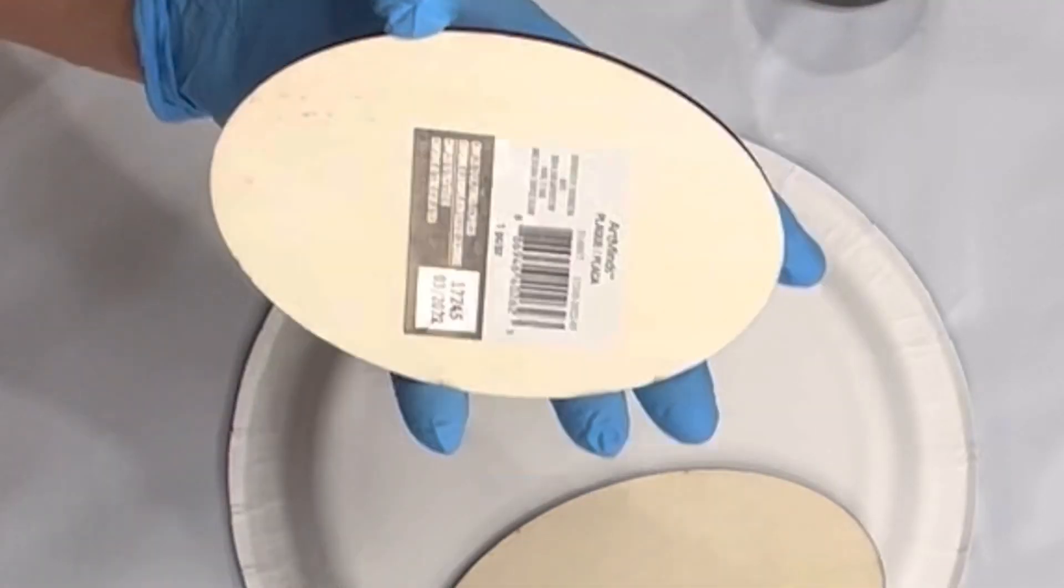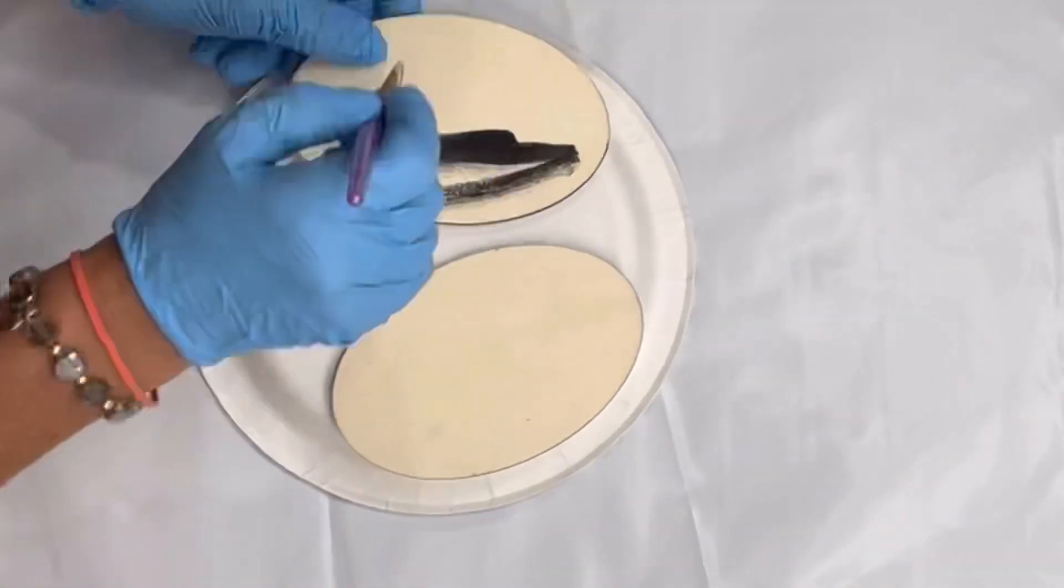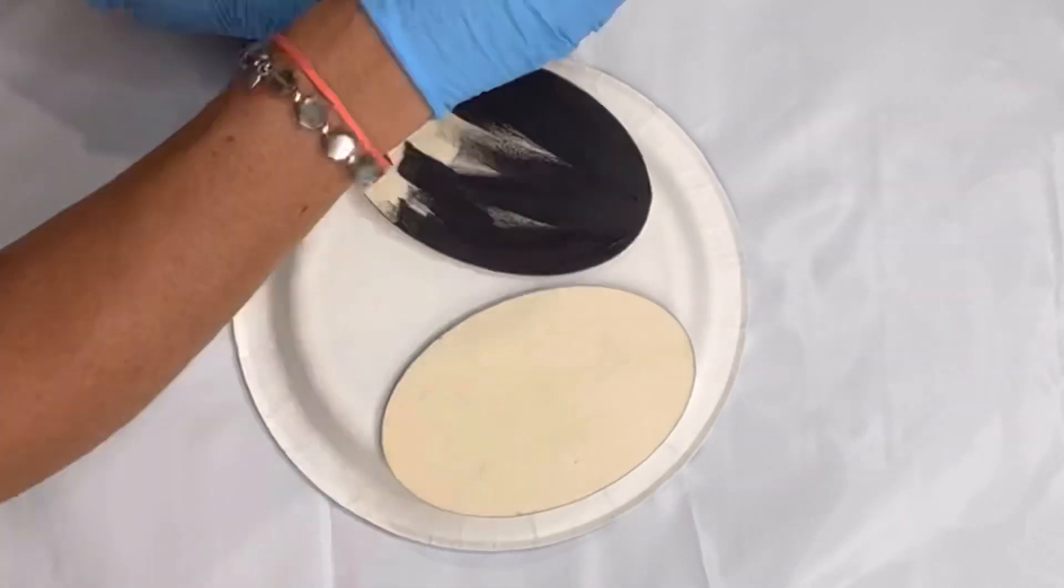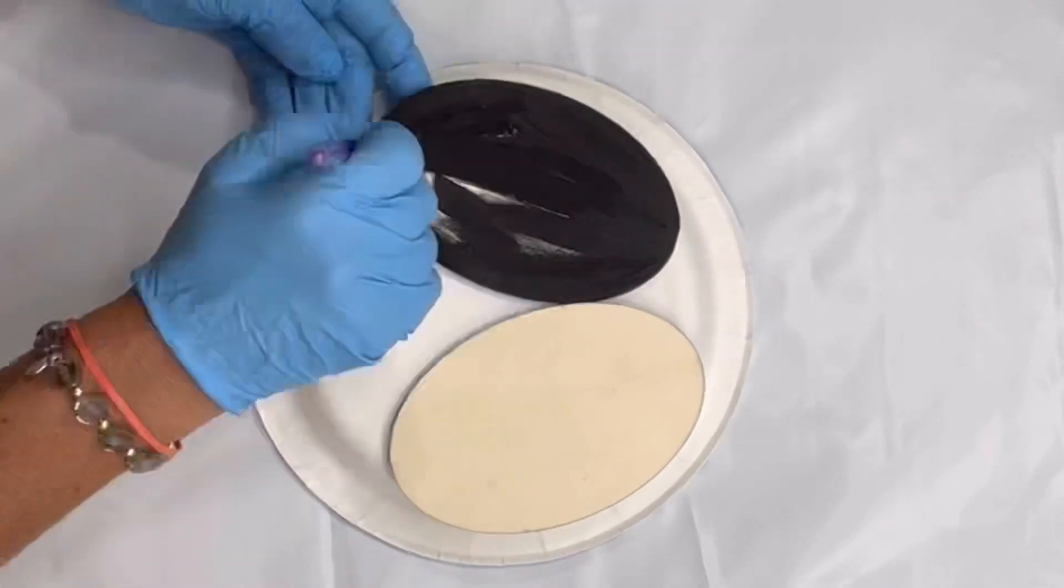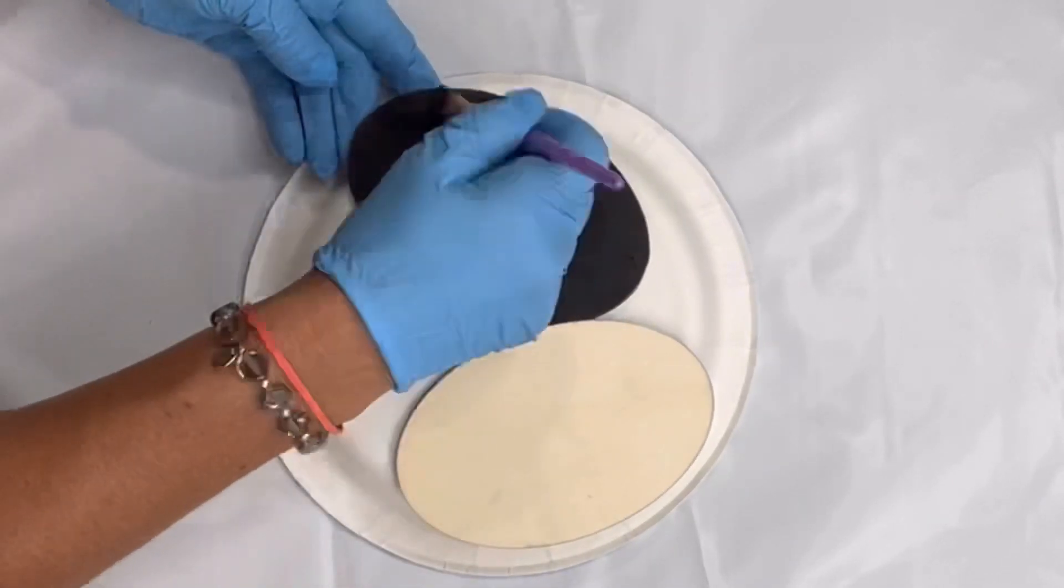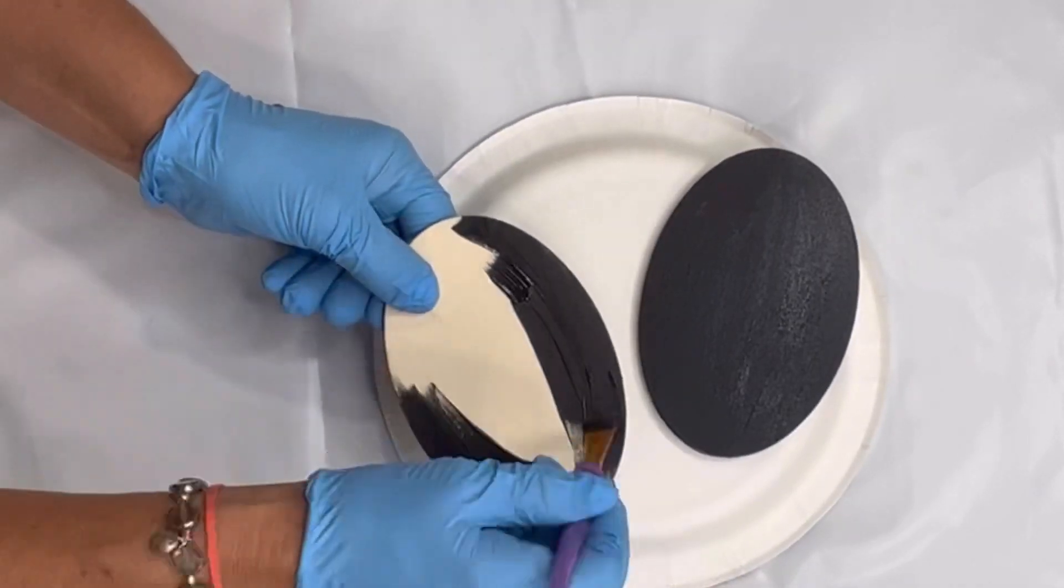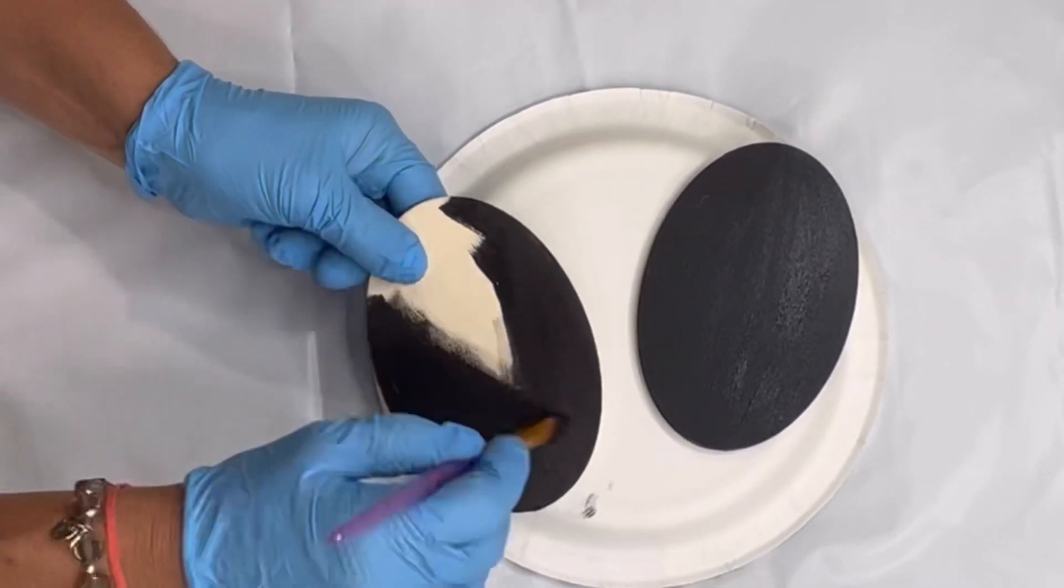I found these ovals at Michael's. You can also use leftover Easter eggs from the Dollar Tree. I'm going to paint these black. They're just oval shapes that came in a package with several pieces.